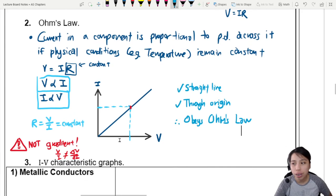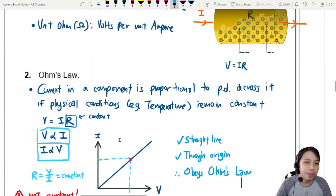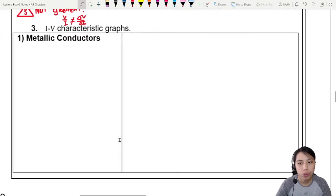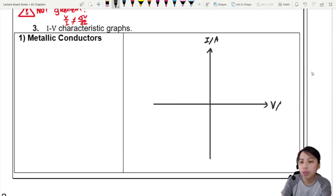So these are what we call IV characteristic graphs and there are quite a few of them. This one is for what we call metallic conductors, Ohm's law. Okay, metallic conductors usually will be Ohm's law. So if we were to draw a graph of I against V, okay, I is in terms of ampere, the unit, V is in terms of volts. Okay, that's a save. Let's see.